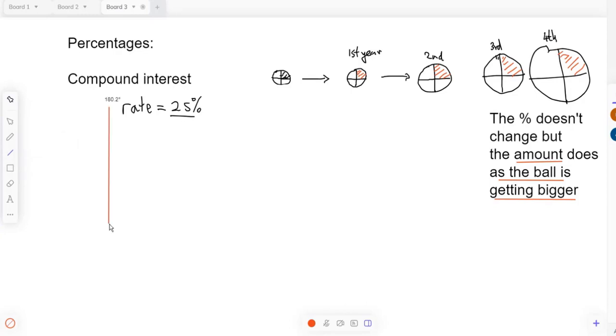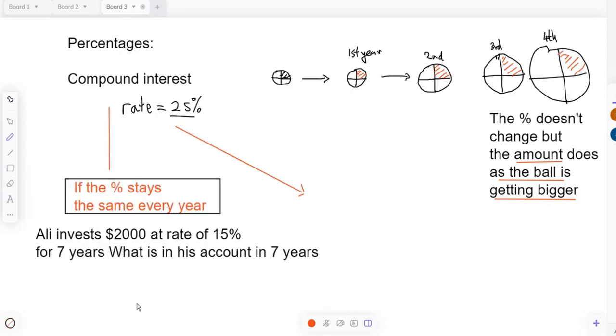So how do we do this? How do we calculate? There's a couple of things that can happen. There's two scenarios. One, the percentage stays the same every year. So let's look at an example for that. If the percent stays the same, what we do is we have a nice little formula for this.